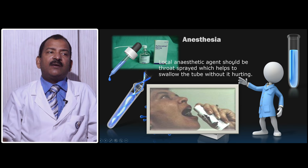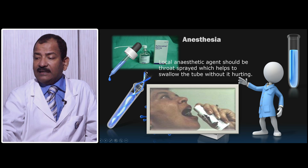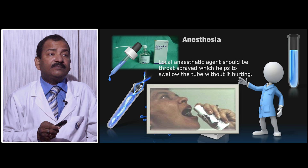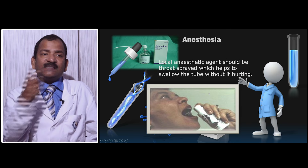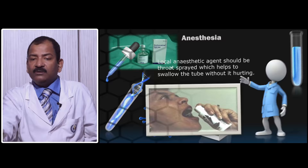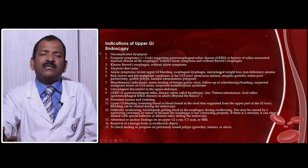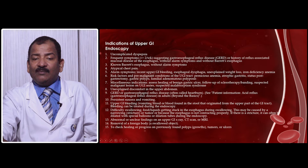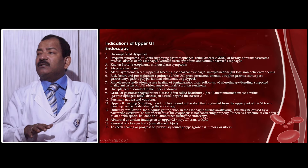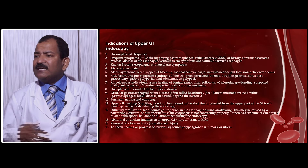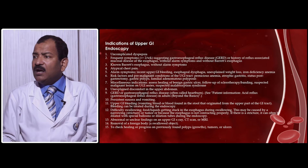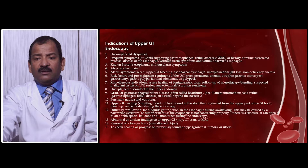For anesthesia, you can use xylocaine or lignocaine spray, which allows the patient to swallow smoothly with less irritation and also acts as a lubricant. Xylocaine viscous, spray, or jelly can be swallowed and after that you will perform the procedure. Regarding indications, there are hundreds — from uncomplicated dyspepsia up to checking the healing and progress of polyps, growths, tumors, or ulcers. Upper GI endoscopy is now a routine procedure for peptic ulcer, gastric lymphoma, and indigestion — there is a huge list of indications.